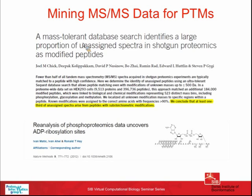A complementary approach is reusing or reanalyzing existing proteomic data. For example, a phospho-isolation study will often co-isolate other phosphate-containing molecules—in one case, ADP ribosylation. Reanalyzing this already-measured data allowed researchers to pull out a large number of ADP ribosylation sites, largely increasing knowledge about a previously poorly characterized modification.